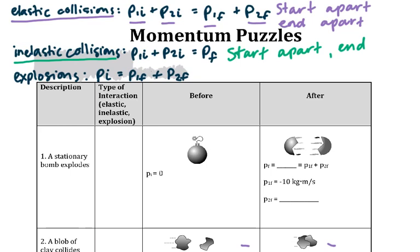So we see that in the equation where P1i and P2i are listed separately, but the final momentum is just Pf. The two objects start apart, they collide, and then they travel together.